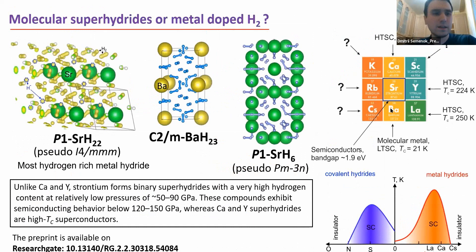Finally, my conclusions. I would like to say that we still do not know a lot about rubidium, cesium and scandium superhydrides. I learned today something about potassium H5 and new hydrides found in potassium hydrogen system, but I think we made a significant and very important step forward for strontium superhydrides. Unlike calcium and yttrium, strontium forms binary superhydrides with very high hydrogen content at relatively low pressures and these compounds exhibit semiconducting behavior, whereas calcium and yttrium, the neighbors of strontium, their superhydrides are high temperature superconductors. It's a very interesting feature. The preprint of this work is available on ResearchGate and arXiv and at this point I would like to stop my presentation. Thank you very much for your attention.